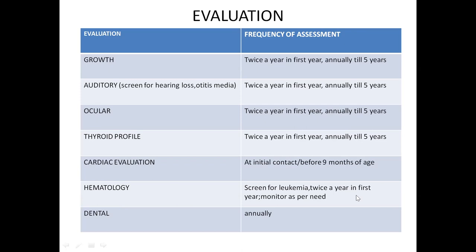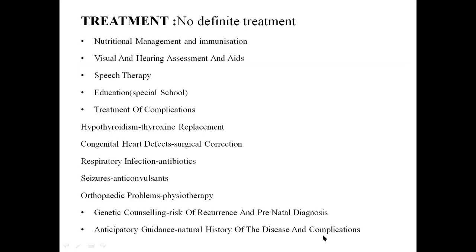Mortality in Down syndrome: main cause is congenital heart disease, followed by recurrent lower respiratory tract infections, leukemia, sudden death, and atlantoaxial dislocation. Prevention of genetic disorders in general: carrier screening, newborn screening, prevention of neural tube defects by folic acid supplementation — 0.4 mg for normal pregnancy, 4 mg if previous child had neural tube defect, started one month before conception and continued for three months after. Maternal screening and quad screening in second trimester are very important.